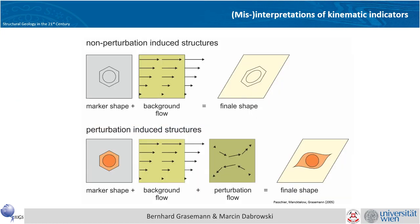Generally we can distinguish between kinematic indicators which are non-perturbation-induced structures, where we have a homogeneous rock with marker shapes and marker lines, and by deforming them with a background flow will result in final shapes which might give you information about the shear sense.